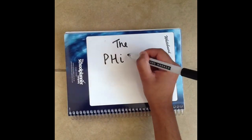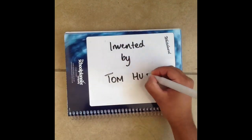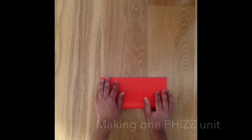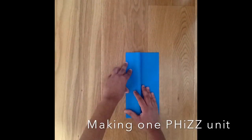We are using fizz units invented by Tom Hull to make an origami structure of the truncated icosahedron. This is how you make one fizz unit.